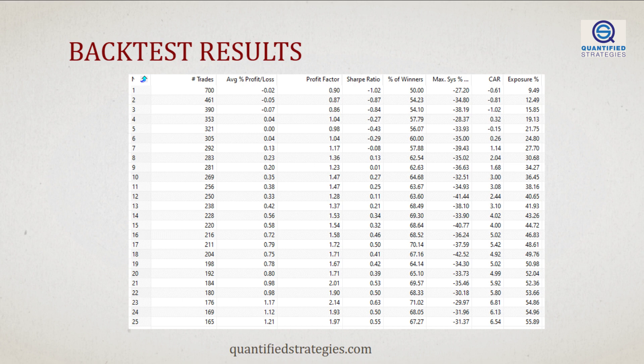Our backtest is summarized in this table. The first column shows when we exit — row 1 exiting after 1 day, row 2 after 2 days, and so on. Column 3 shows that the returns in the first 5 days after entry are significantly lower than the long-term average, which is about 0.05% per day. However, as time goes on, the returns gravitate toward the long-term averages, as expected.